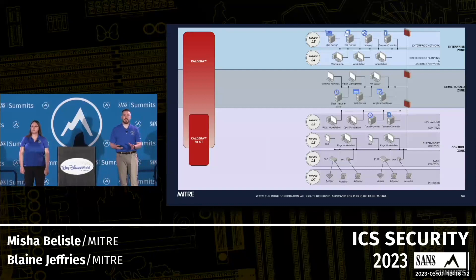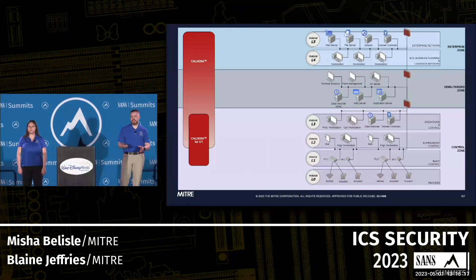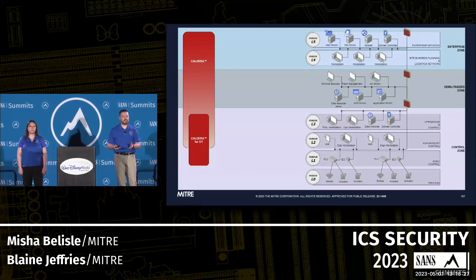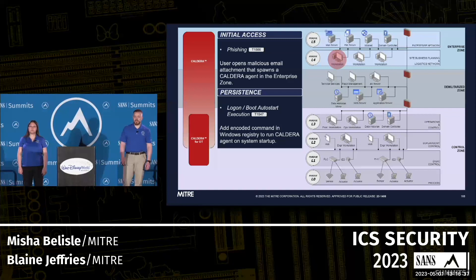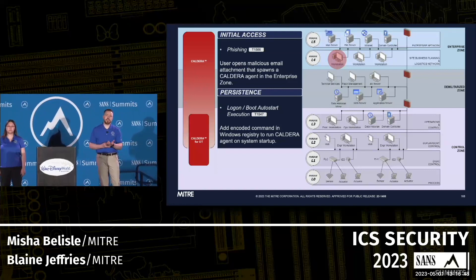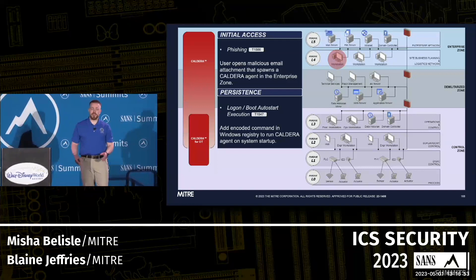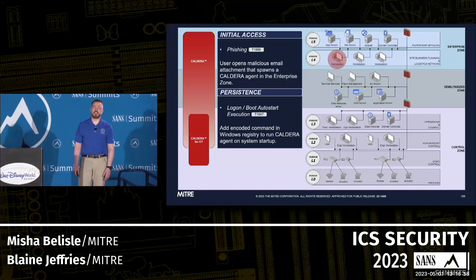On the slide we've got a pretty typical network layout for an operational environment with IT and OT infrastructure — three different zones: Enterprise, DMZ, and Control Zone. On the left of the slide we'll run through a variety of Caldera abilities that you can run today with Caldera core and additional abilities extended with the OT plugins. The core of how Caldera works is executing these abilities from agents.